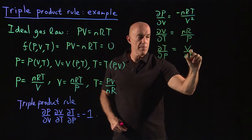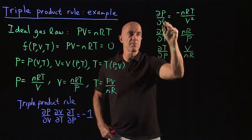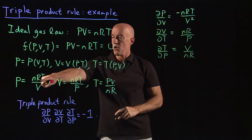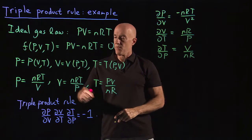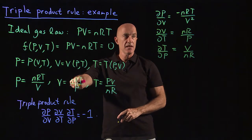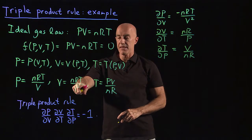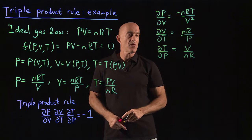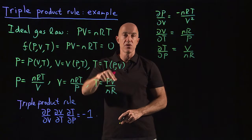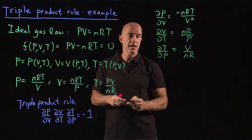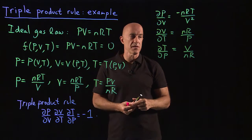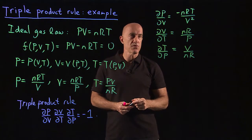When we take the partial derivative of P with respect to V, we hold T fixed. When we take the partial of V with respect to T, we hold P fixed. When we take the partial of T with respect to P, we hold V fixed. Sometimes you write that explicitly, but we won't do that here.